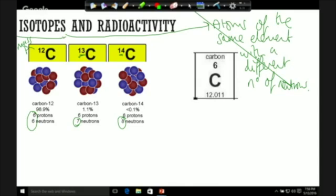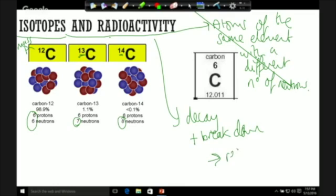And with these isotopes, what tends to happen is some of them are radioactive. And that means they decay and break down. And when they do that, they release radiation. And we'll look at the different types in a minute.